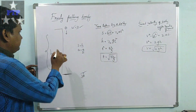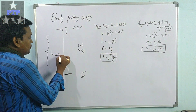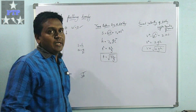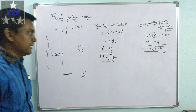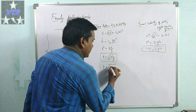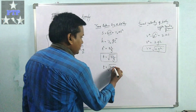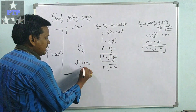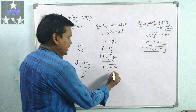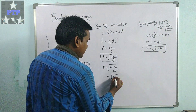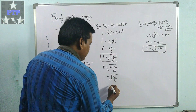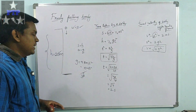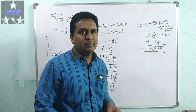Now consider the height of the building as 20 meters. The time taken by a body dropped from this 20-meter building is: t = √(2h/g) = √(2×20/10). Taking g approximately as 10 m/s². So t = √(40/10) = √4 = 2 seconds. The body will take 2 seconds to reach the ground if dropped from a building of 20 meters height.